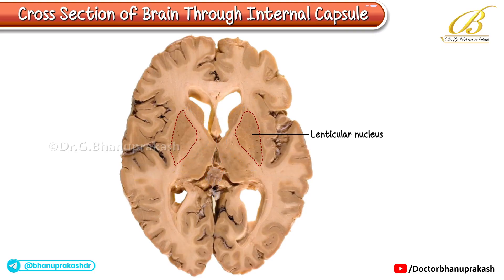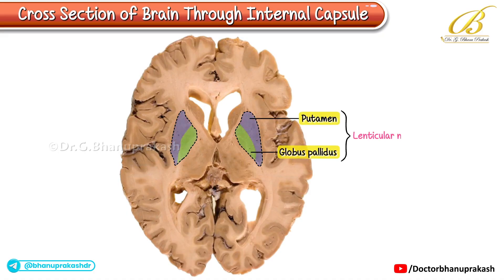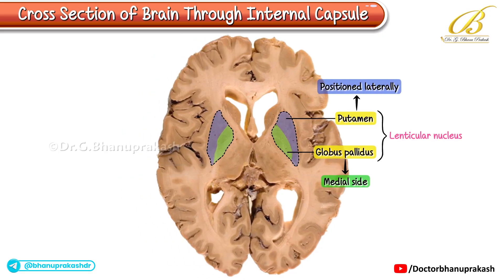The lenticular nucleus consists of the putamen and the globus pallidus within the basal ganglia. The globus pallidus is located on the medial side while the putamen is positioned laterally.